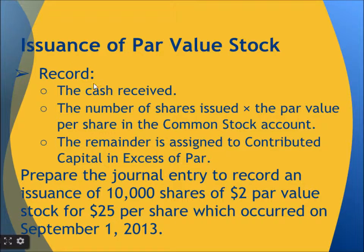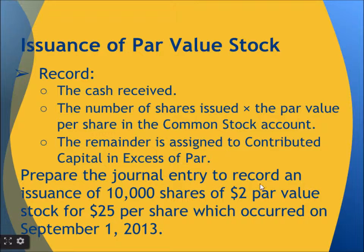What we need to record is the cash received, the number of shares issued multiplied by the par value per share in the common stock account. The remainder is assigned to contributed capital in excess of par. Here is an example: prepare the general journal entry to record an issuance of 10,000 shares of $2 par value stock for $25 per share, which occurred on September 1, 2013.